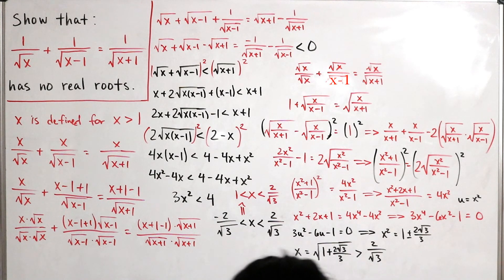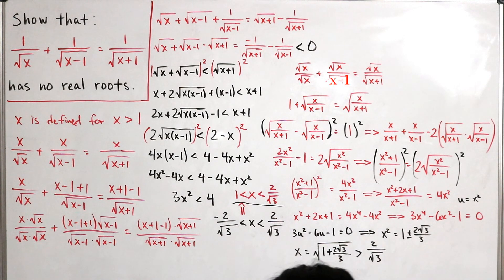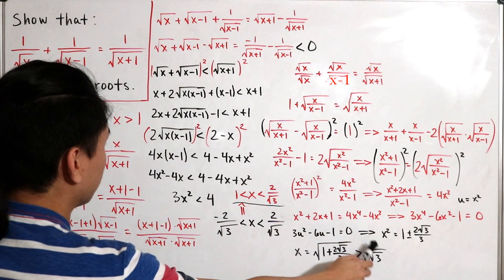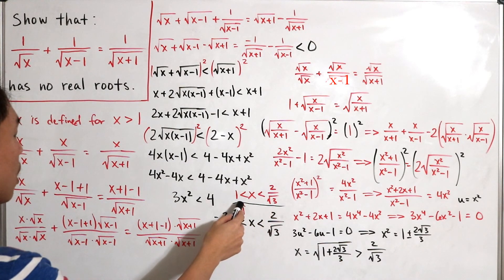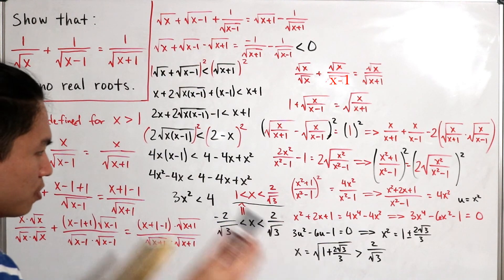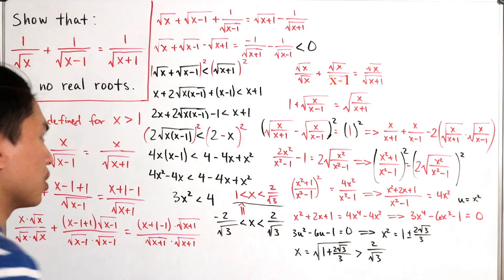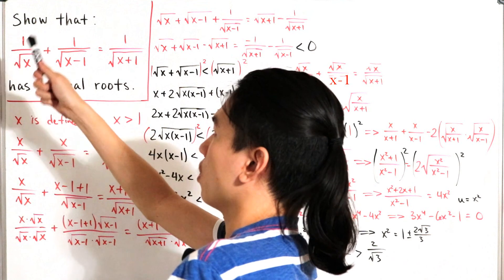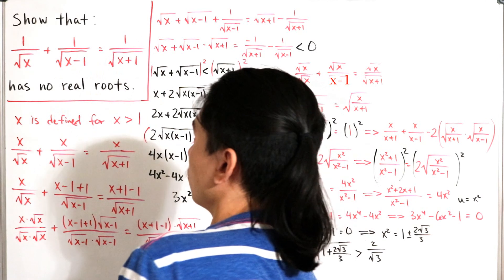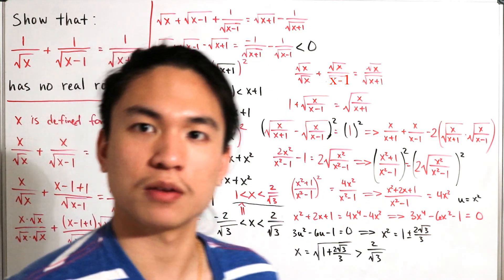This value is actually strictly greater than 2 divided by the square root of 3 — which was the upper bound from our compound inequality. This forms a contradiction, because we showed x must equal this value, yet it falls outside the bound 1 less than x less than 2 over the square root of 3. Therefore, by contradiction, we have proven there are no real roots such that 1 over the square root of x plus 1 over the square root of x minus 1 equals 1 over the square root of x plus 1.